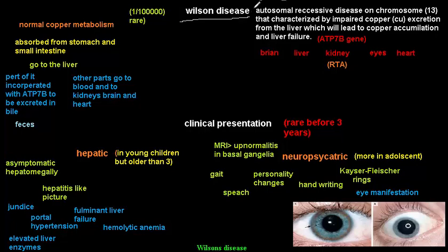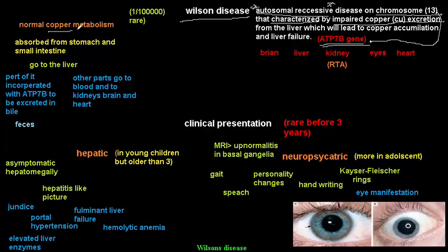Wilson disease is an autosomal recessive inherited disorder. The exact defect is in chromosome 13, specifically in the ATP7B gene. This defect leads to impaired copper excretion — the copper should be excreted via bile — so in Wilson disease we have impaired copper excretion from the liver.